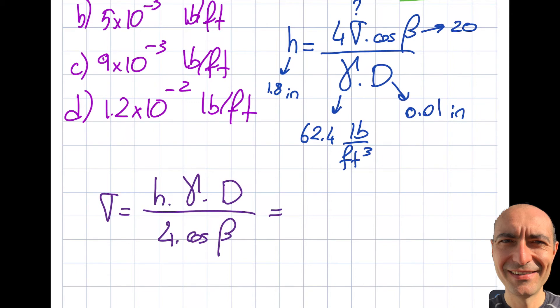Am I going to write 1.8 for h? No, not really. I have to convert that to foot, right? So that's going to be 1.8 divided by 12 and again this will be in foot. Specific weight is 62.4, that's going to be pound per feet cube. The diameter is 0.01 divided by 12. Again, that will be in feet.